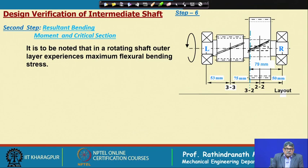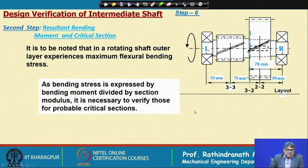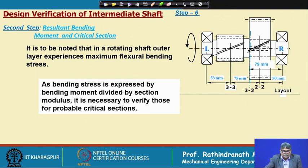It is to be noted that in a rotating shaft, the outer layer experiences maximum flexural bending stress. As bending stress is expressed by bending moment divided by section modulus, it is necessary to verify those for probable critical sections.